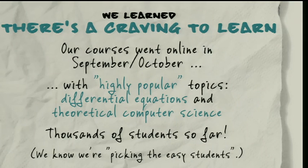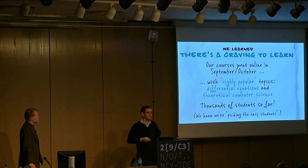Still, we had several good experiences. The first thing we experienced is that there is a craving to learn out there — this is an offering with high demand. Both our courses went online, mine in October, Jörn's in September. We chose highly popular topics: Jörn gave a course on differential equations, I taught theoretical computer science. Talking about mass education, those are probably not the topics you'd choose — yet we had thousands of students taking those courses.